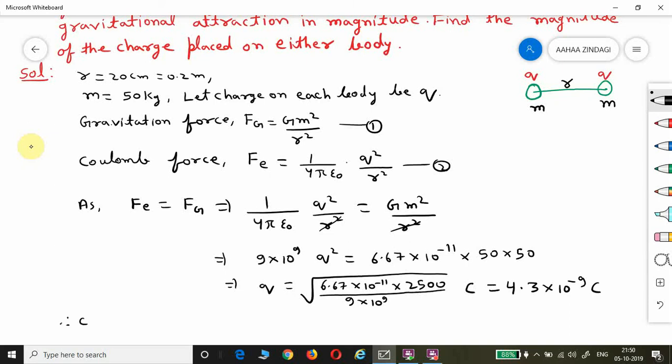Therefore, charge on each body is q equals 4.3 times 10 to the power minus 9 coulombs.